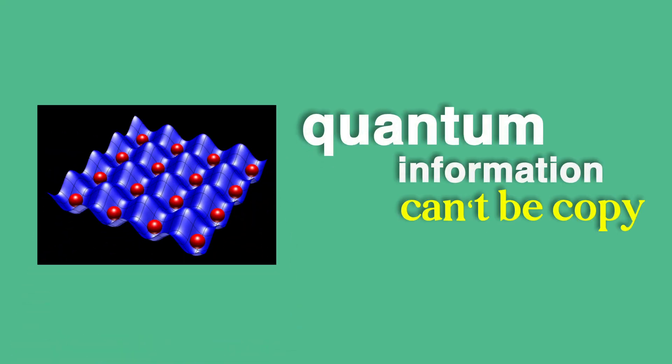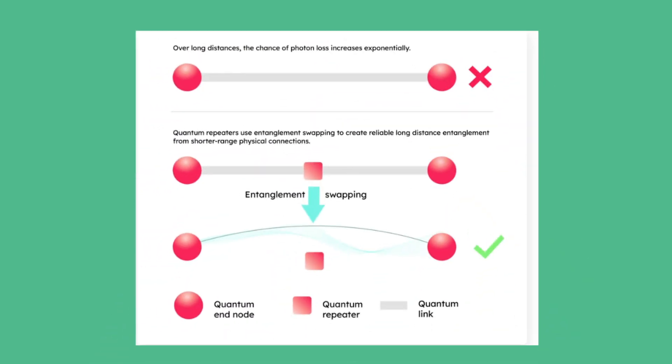Normal internet solves this with amplifiers that boost the signal. But quantum information can't be copied. You can't amplify a photon without destroying the quantum state it carries. So scientists need something else, something called a quantum repeater.